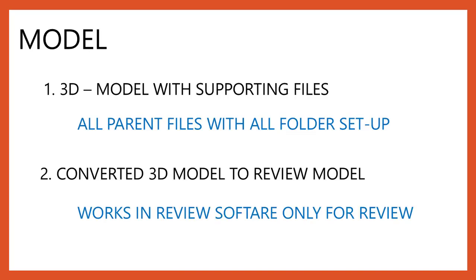Now let's go to the last deliverable, which is the model — a 3D model with all supporting files. There are two types of 3D models submitted. The first is the parent files with all folder structures, submitted to the client so they can open it in the same software used to build the models. The second type is a converted 3D review model, used only for review purposes where you can review pipings, structures, cable trays, and instrument drawings but cannot make any modifications.